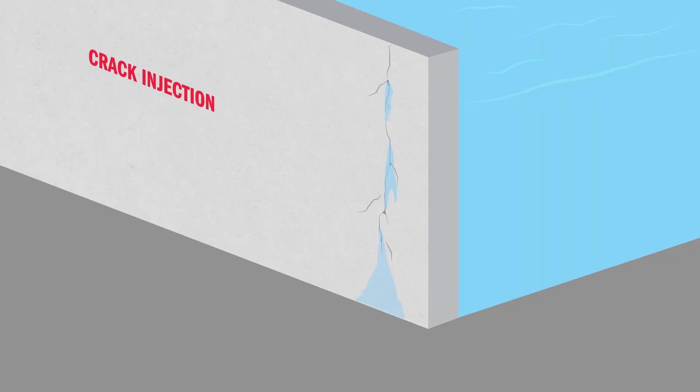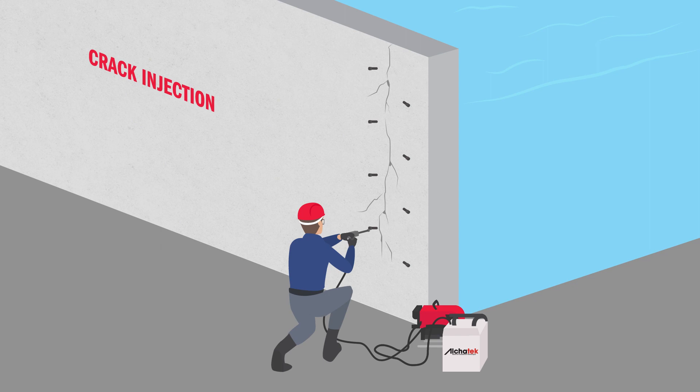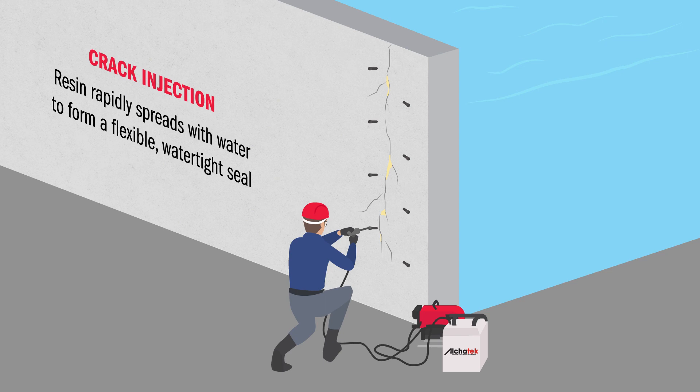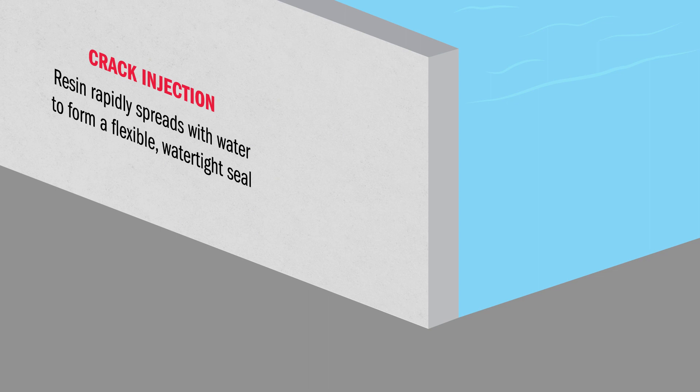Crack injection is a different approach for smaller cracks or joints. They are typically repaired by drilling holes and inserting injection ports at an angle to intersect the crack or joint inside the wall and then injecting directly into the center of the crack or joint through the ports. The resin rapidly reacts with water to form a flexible watertight seal. Once the leaks are sealed, the wall can be refinished to look as good as new.